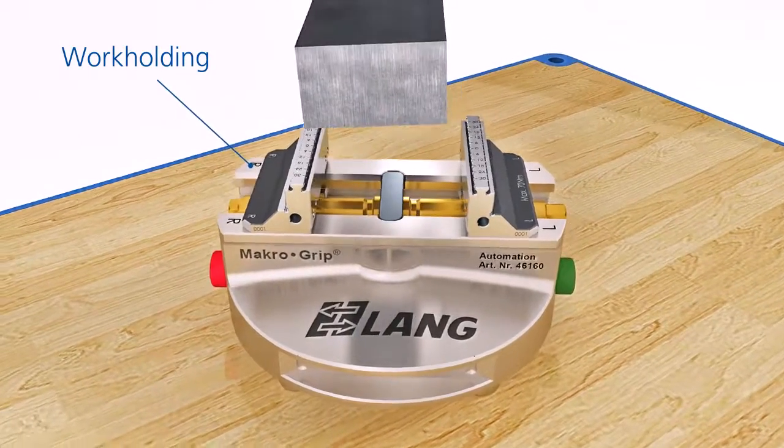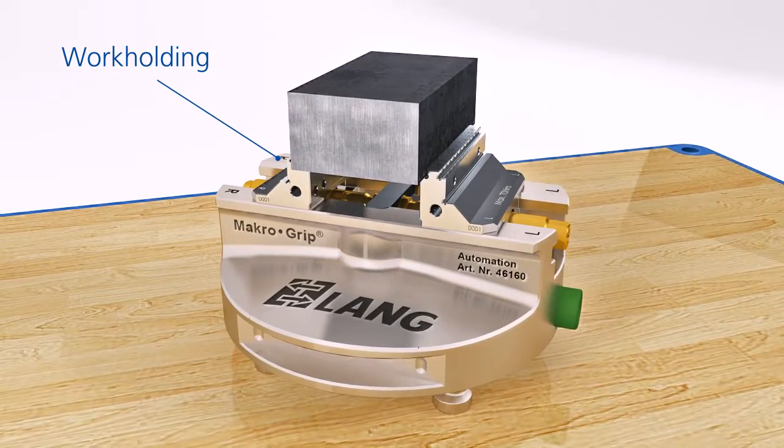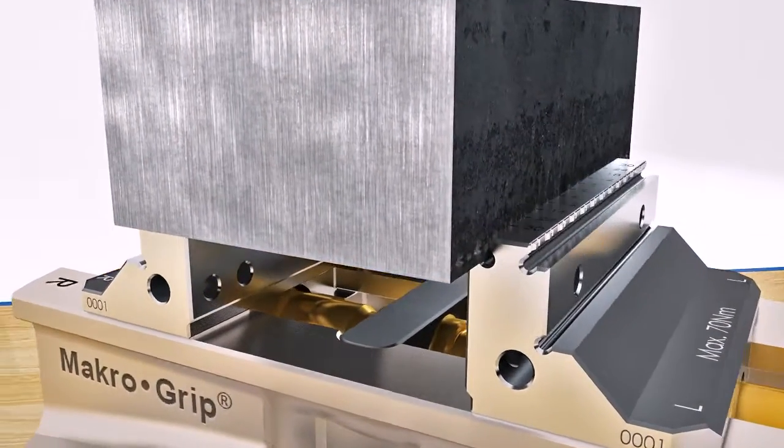After pre-stamping the work with form closure, the stamped workpiece is clamped in the tooth jaws with a clamping depth of just 3 mm and is now ready for operation in the machine tool.